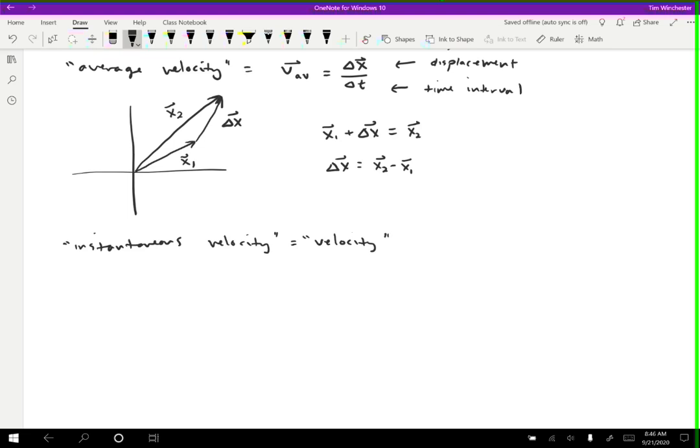And this is just the average velocity, but over a really short time period. So the velocity with no subscript is just equal to the limit as delta t gets really, really small. So delta t goes to zero of delta x over delta t. So it's the same as average velocity. We just make delta t really, really small.